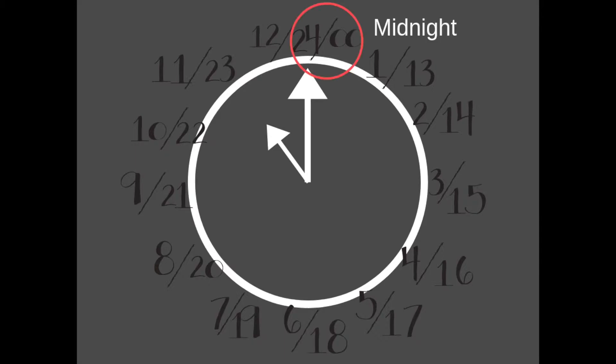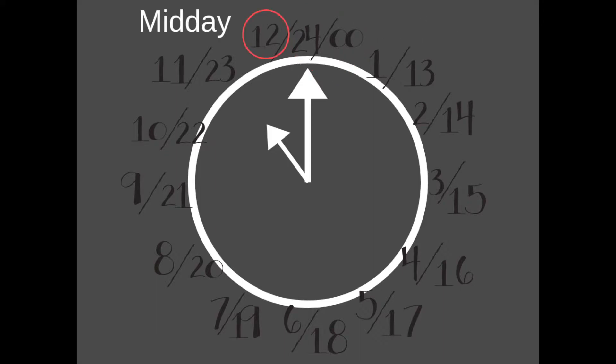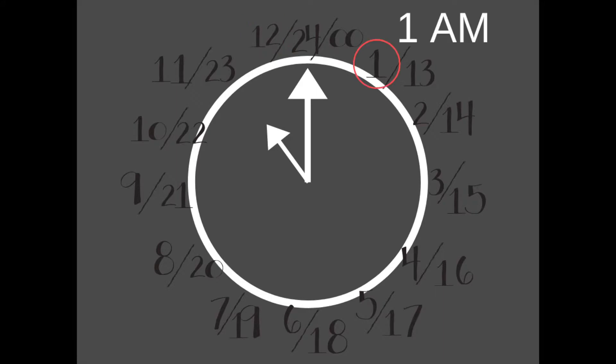Counting from midnight to midday we use 1 to 11, but from midday to midnight it's 12 to 24, or more correctly 00, because the counting restarts.